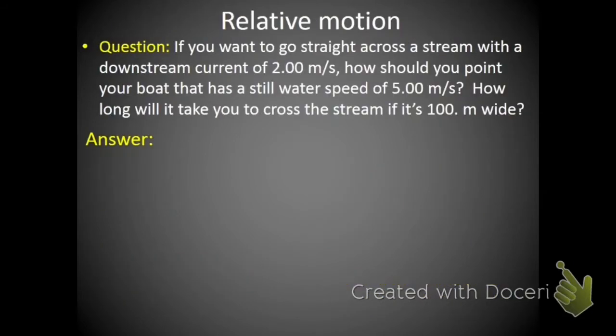For this last problem, we're going to talk about relative motion, which is objects that are moving relative to each other, so you've got multiple pieces of movement. In this case, we want to go straight across a stream that has a downstream current of 2 meters per second. Our boat has a still water speed of 5 meters per second, so we're going to have to point it somehow into the current, and we also want to have a bonus question here of how long will it take to cross the stream if it's 100 meters wide. So first what we're going to do is we want to look, we've got this 2 meter downstream current. If we want to go straight across, we're going to have to point into the current at some angle because the current is going to push us. So really the question is, what is this angle that I need to point into the current to make it straight across? And this is actually pretty straightforward now that I've drawn the picture. Drawing the picture is actually the hard part.